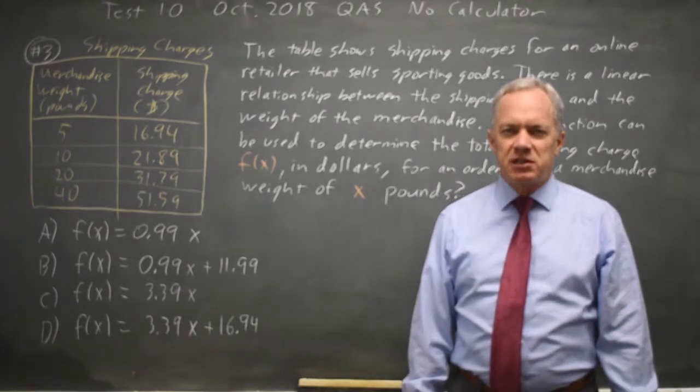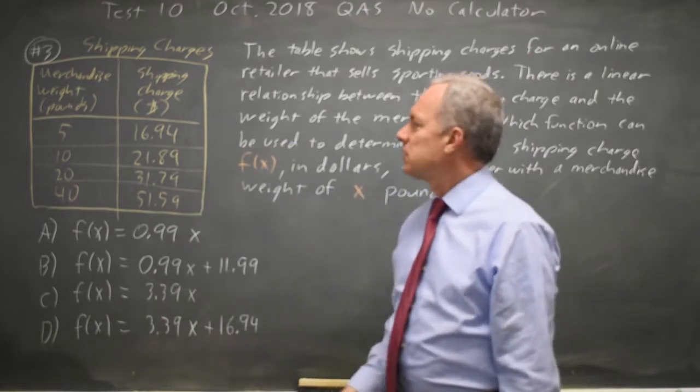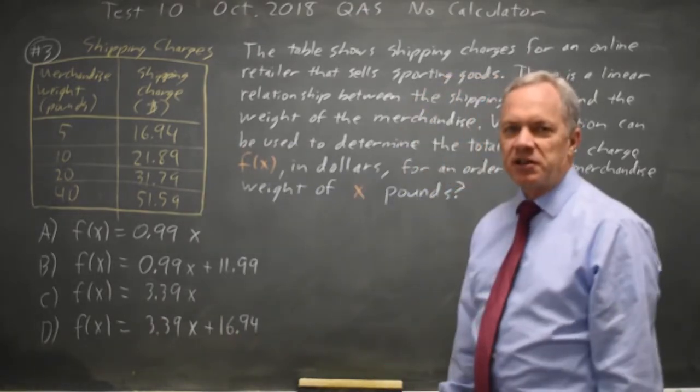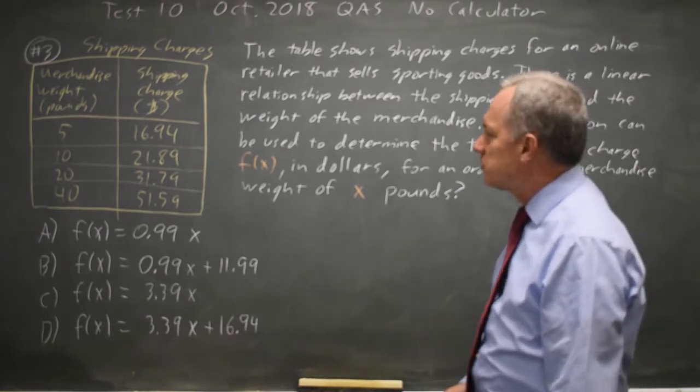This is question 3. The College Board is asking us to find the linear equation that fits this table of data. And we don't have calculators, so we can't use the linear regression option on a graphing calculator, but it turns out we don't need them.